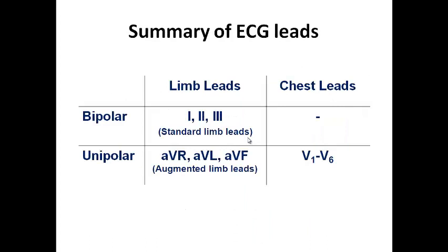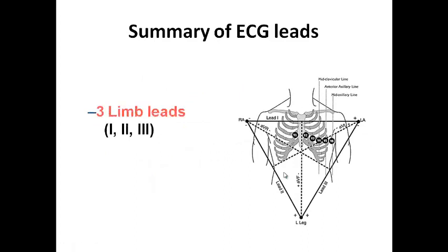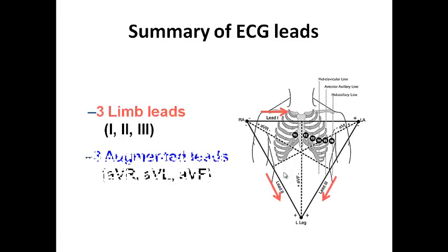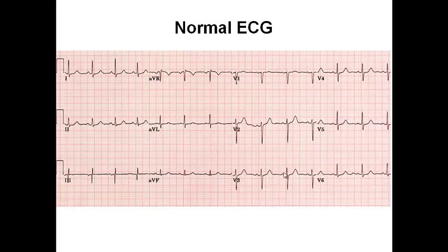In summary, we have two groups of limb leads — three bipolar and three unipolar augmented — plus six unipolar chest leads. Understanding how each lead sees the heart allows us to understand the morphology of the waveform in each lead based on the direction of electrical activity, whether in a normal heart or in pathological conditions.